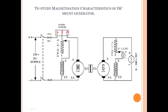We use a 220-volt DC supply. The positive of the mains is directly connected to L, which is the line terminal of the three-point starter.